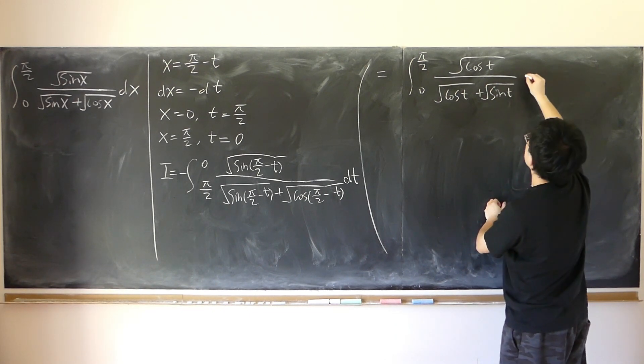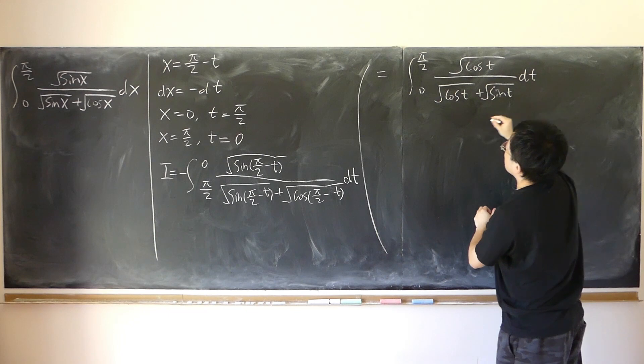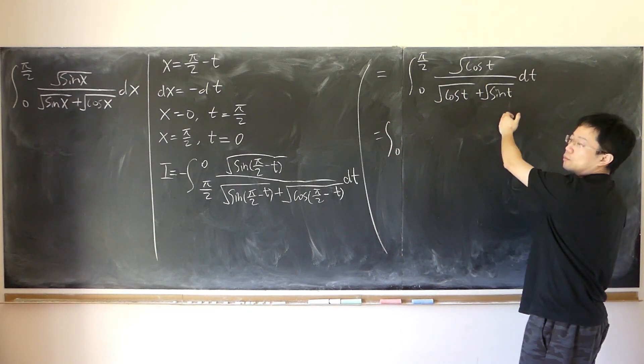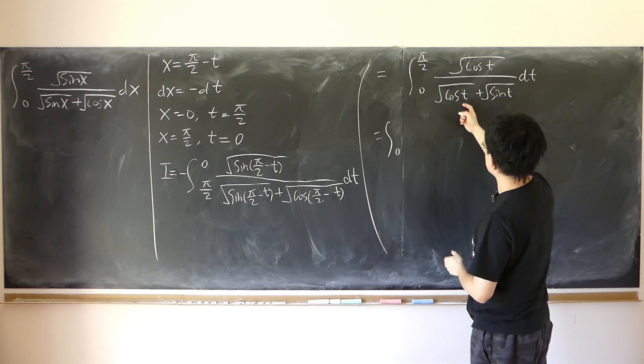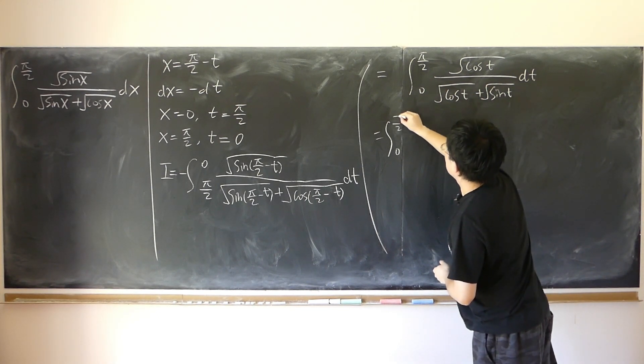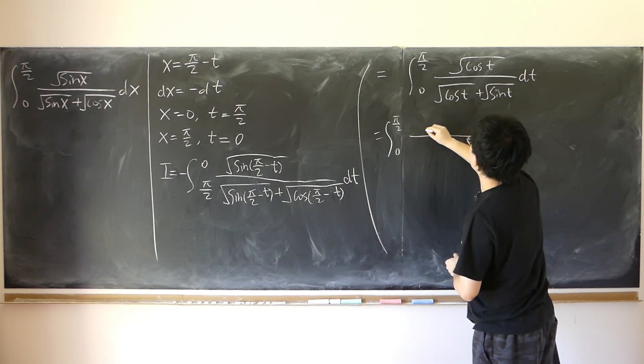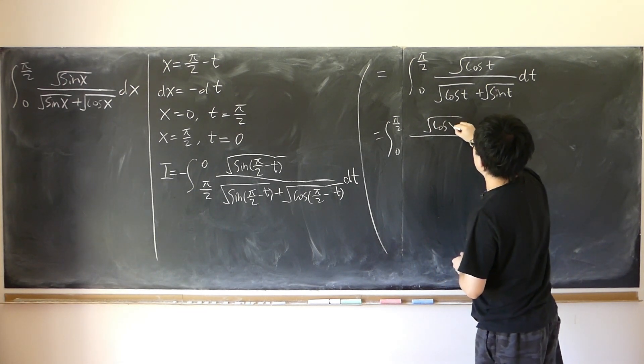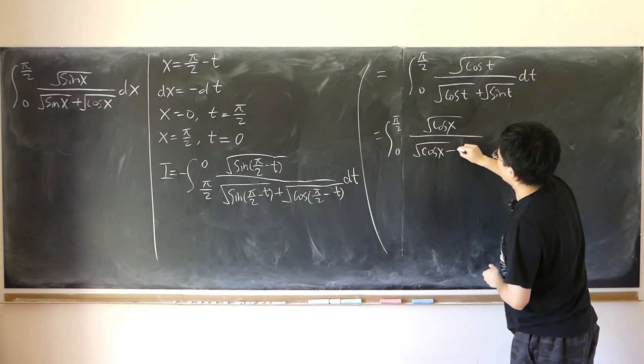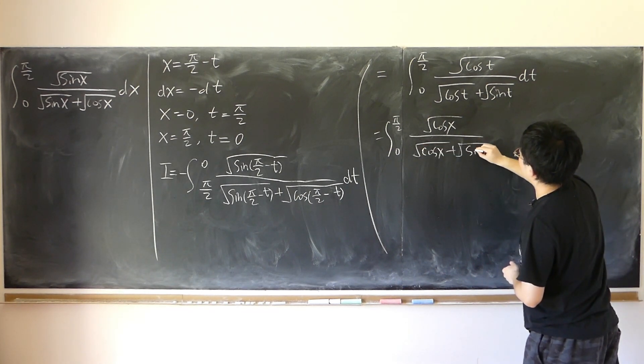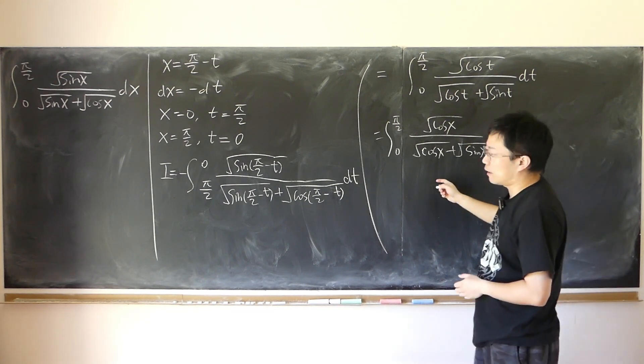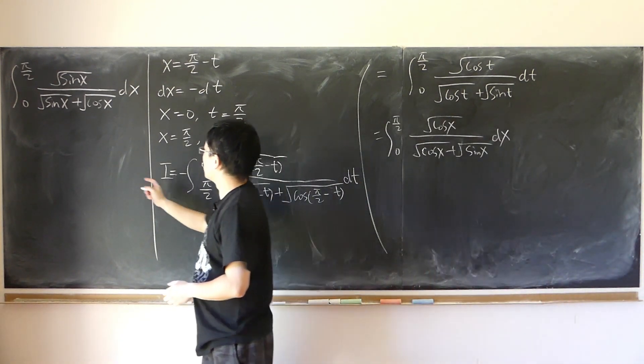And trig identity dt. And since t is just a dummy variable, if we change t consistently throughout into x, we have exactly this, cosine x, square root of cosine x plus square root of sine x, then dx. And that's exactly the original integral as well.